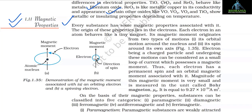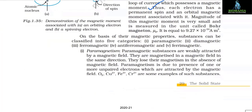1.11 Magnetic Properties. Every substance has some magnetic properties. Each electron in an atom behaves like a tiny magnet — its magnetic moment originates from (1) its orbital motion around the nucleus and (2) its spin around its own axis. Each electron has a permanent spin and an orbital magnetic moment associated with it. The magnitude of this magnetic moment is measured in units called Bohr magneton (μB), equal to 9.27 × 10⁻²⁴ A·m². On the basis of magnetic properties, substances are classified into five categories.